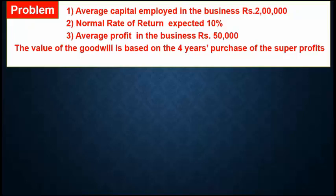This means one business is purchasing another business. The capital employed in that business is rupees 2 lakh, the normal rate of return is 10%, average profit is rupees 50,000, and the goodwill is based on 4 years purchase of super profit — meaning you multiply the super profit by 4 years. Now let's solve the problem.